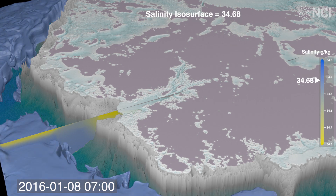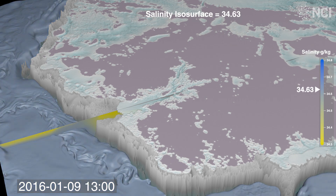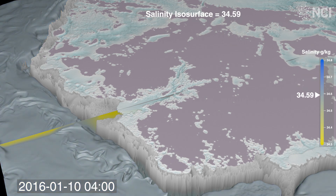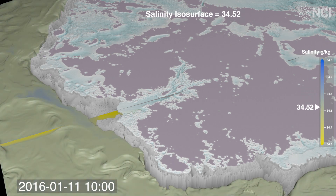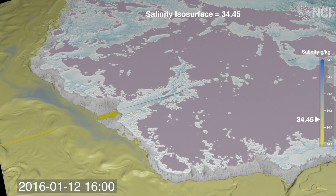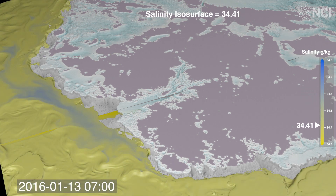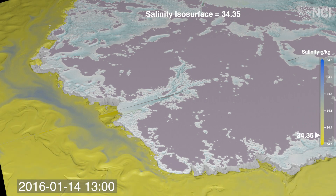The ocean forms internal layers, which we can visualise using surfaces of constant salinity. High salinities are found near the sea floor, while the lowest salinity corresponds to the ocean surface.